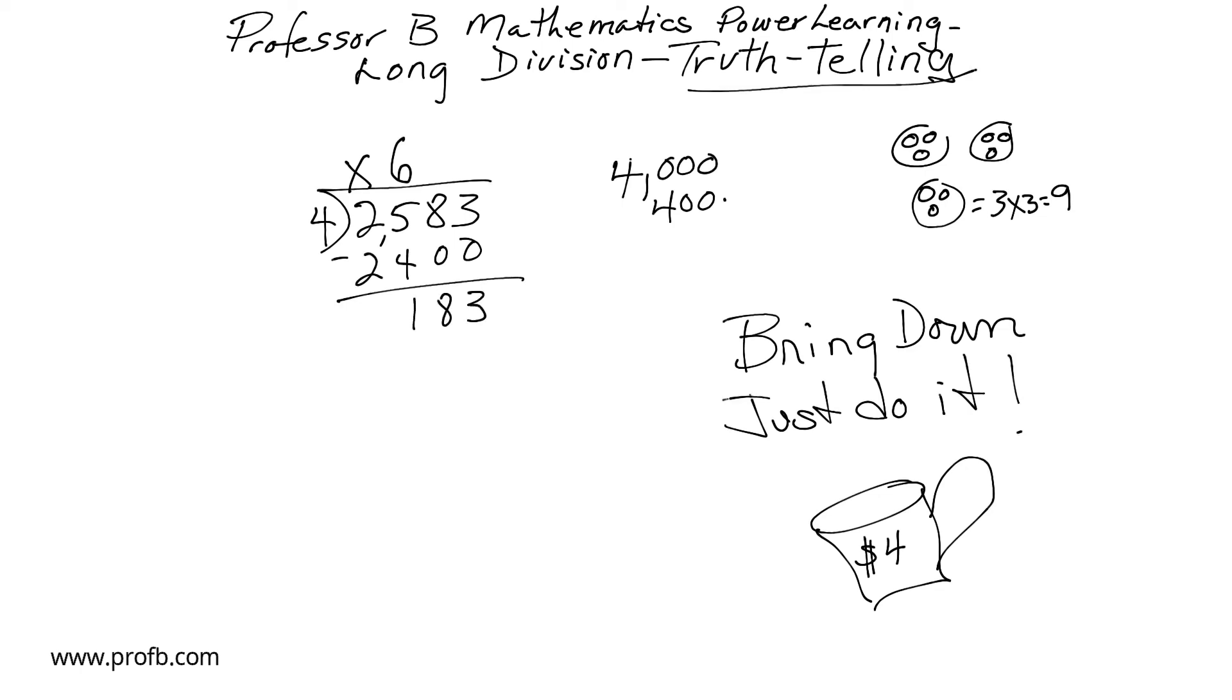And already we are at the tens place now. So can we buy ten cups at four dollars each? Well, yes. Ten cups at four dollars each is forty dollars. And we do have that. But we want the maximum amount of tens. So can we buy ten cups? Yes. Can we buy twenty cups? Yes. Eighty dollars. And we know we can buy forty more cups. Forty times four is one sixty. Leaving twenty-three dollars.